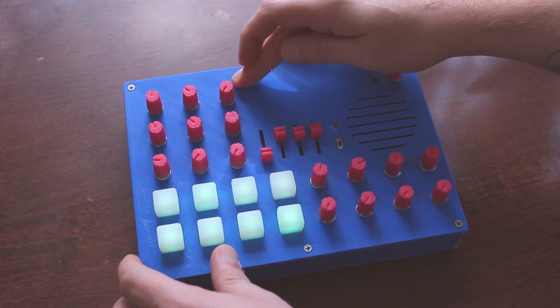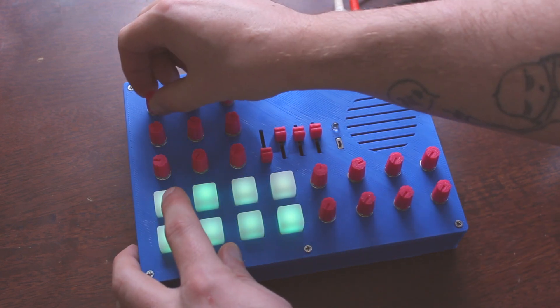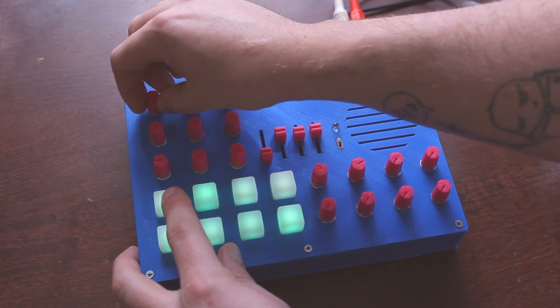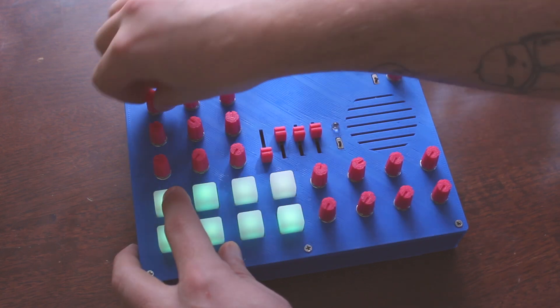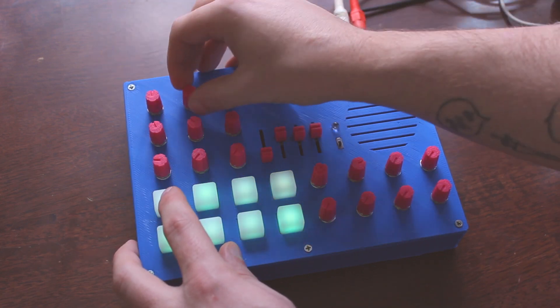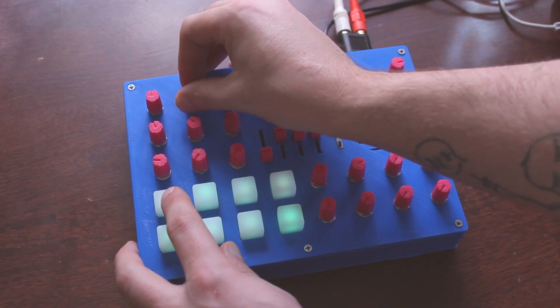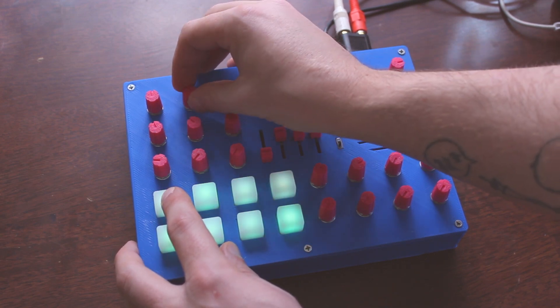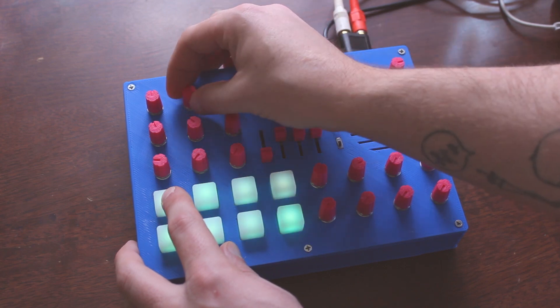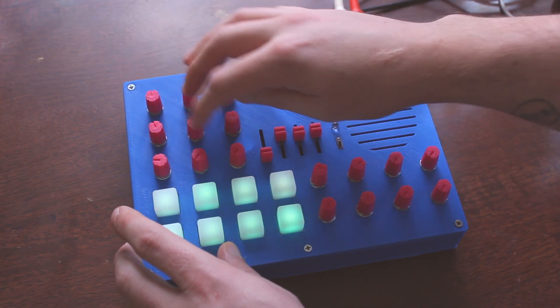So this first row here will be your first voice. And we have an octave for the first one. The second knob will be the wave shape. And we have sine, sawtooth, square, and pulse. And that is the same for these two.